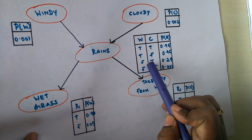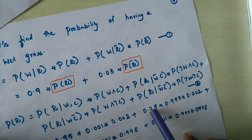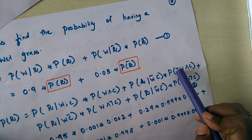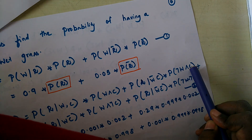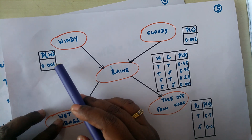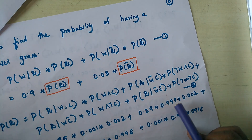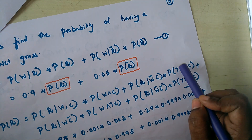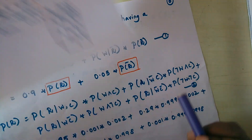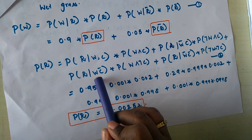When wind is false and cloudy is true, the probability of rain is 0.29. This is multiplied by the joint probability of not windy and cloudy. Not windy is 1 minus 0.01, which gives 0.999, multiplied by the probability of cloudy, which is 0.002. That completes the second factor.